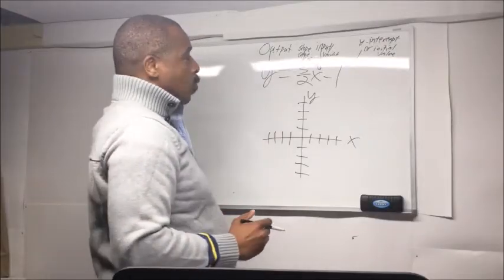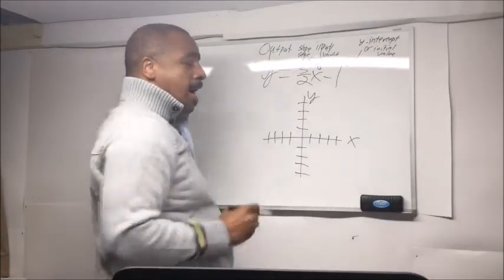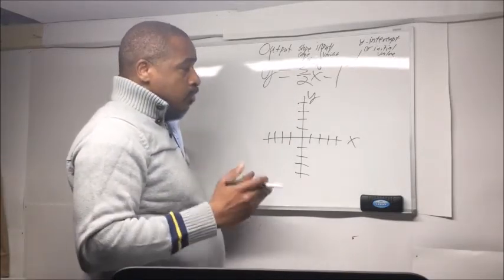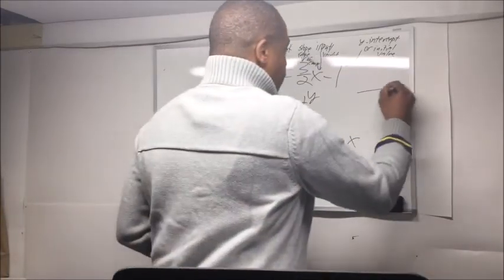The very first thing we want to do is solve for y. How do we do that? We're just going to choose the number 0 and put that in for x.